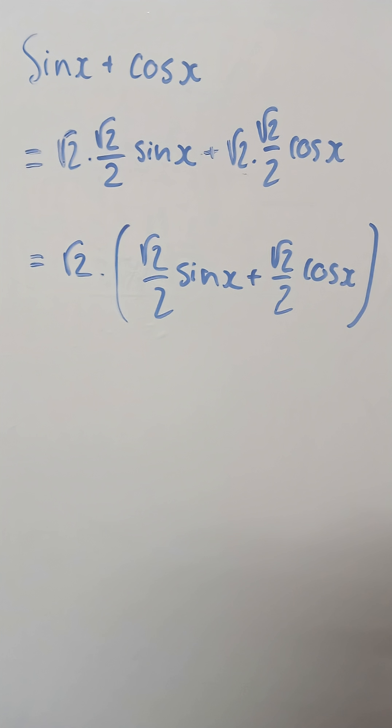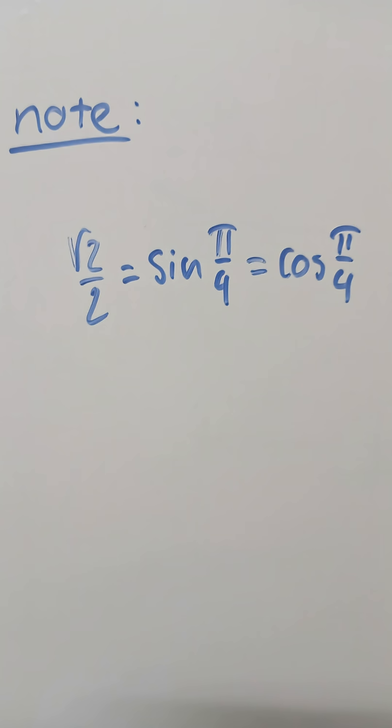But why have to choose the square root of 2? You see, it's interesting to know that the square root of 2 over 2 is both equal to the sine of pi over 4 and the cosine of pi over 4. And that is the application we are looking for.